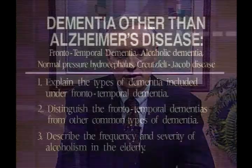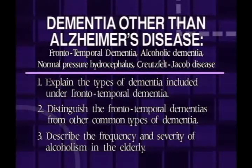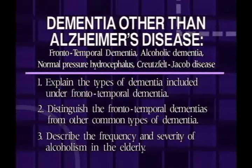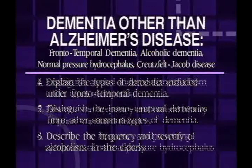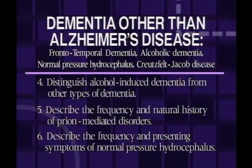Today we're going to be talking about dementia other than Alzheimer's disease. The objectives for this talk include, first of all, explaining types of dementia included under the broad category referred to as frontotemporal dementia. Then we want to distinguish frontotemporal dementias from other common types of intellectual loss, such as Alzheimer's disease. We want to talk about the frequency and severity of alcoholism in the elderly, because drinking produces cognitive loss, and distinguish alcohol-induced dementia from other common types of dementia.